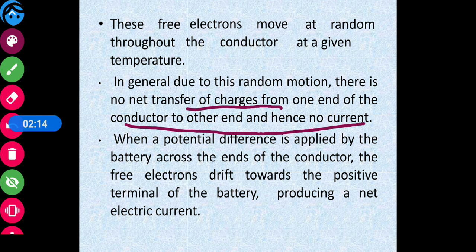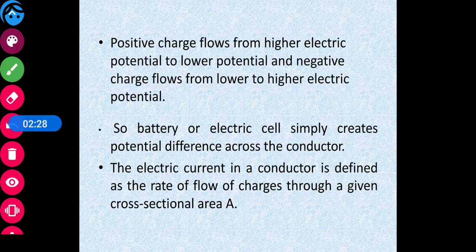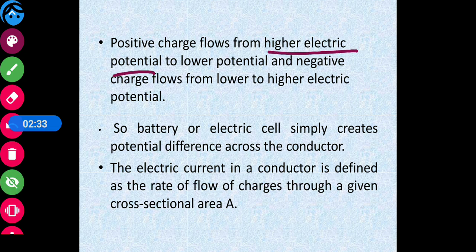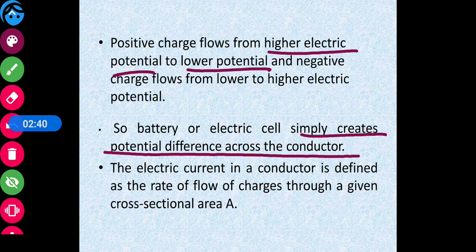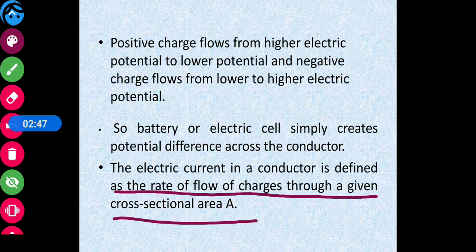There is no net transfer of charges from one end of the conductor to the other, and hence no current. Only when a potential difference is applied by the battery across the ends of the conductor do the free electrons drift towards the positive terminal, producing a net current. Positive charges flow from higher potential to lower potential. The electric current in a conductor is defined as the rate of charge flow through a given cross-sectional area A.